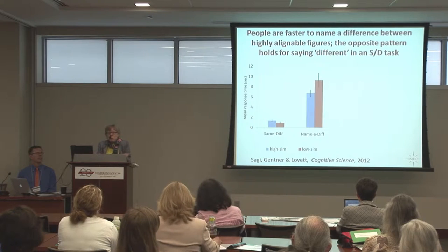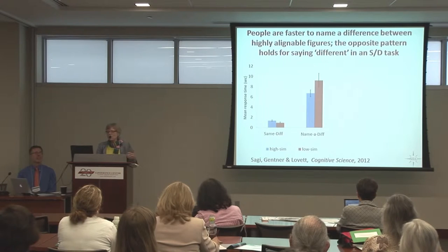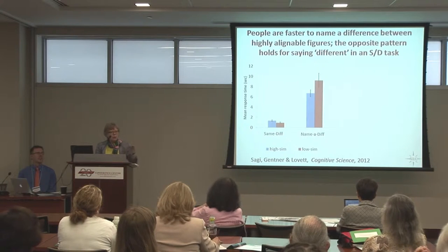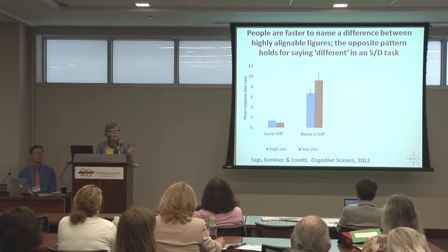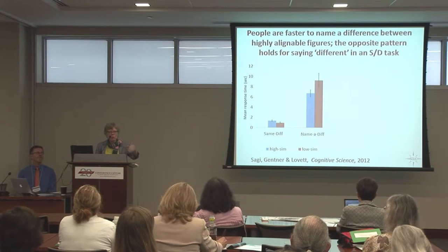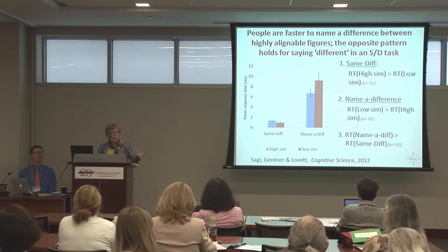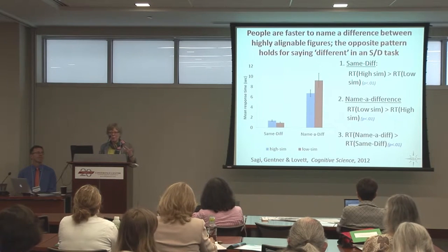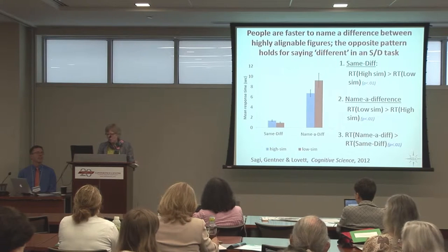This is a very interesting dissociation from the point of view of understanding how similarity works. But the lesson here for taking this into the world is: if you want people to see a specific difference that you have in mind, give them a highly alignable pair. They'll inevitably align it properly, and that difference will then kind of leap out at them. They don't even have to look for it — it comes to them.